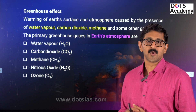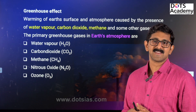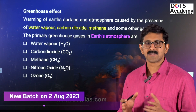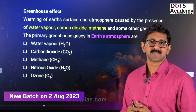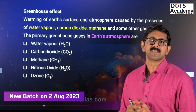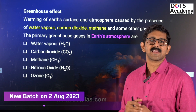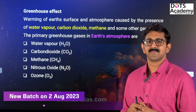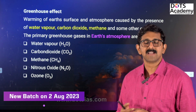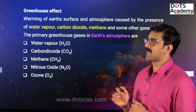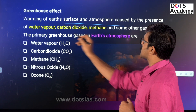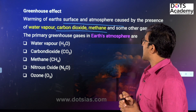We will discuss the greenhouse effect and greenhouse gases. What is the greenhouse effect? The atmosphere has constituent particles — water vapour, gases like carbon dioxide, methane, and ozone. These gases trap heat. That effect is called the greenhouse effect — the warming of Earth's surface and atmosphere caused by the presence of water vapour, carbon dioxide, methane, and some other gases.